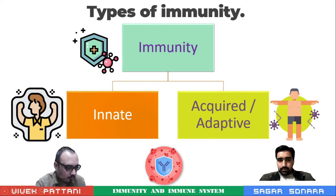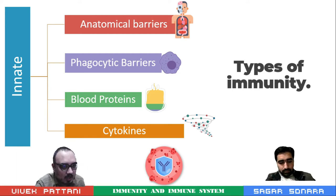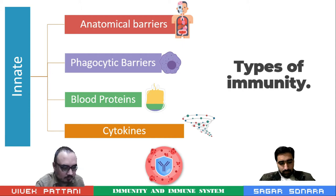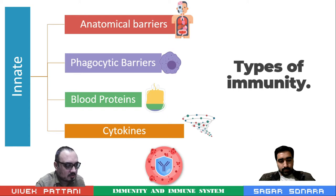Moving forward to innate immunity — which are the barriers covered in innate immunity? Those are anatomical barriers, phagocytic barriers, blood proteins, cytokines, etc.